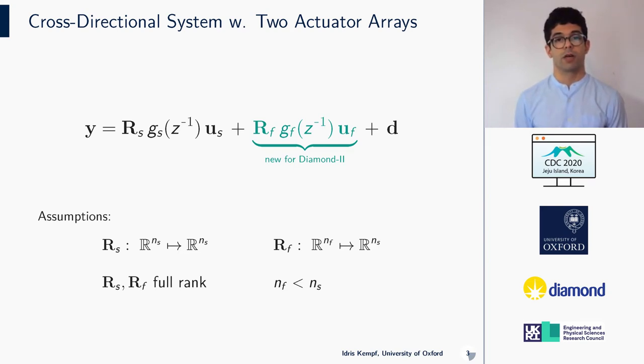Such a system where the temporal component Gs and Gf can be separated from the spatial component Rs and Rf is usually referred to as a cross-directional system. We assume that Rs is square, Rf rectangular, and that both matrices have full column rank.